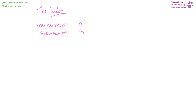Numbers are now going to be n. Even numbers are 2n. And an odd number is going to be 2n plus one. We can say that an even number is 2n because the property of an even number is that it is equally divisible by two. And an even number plus one always has to be an odd number, because even and odd numbers alternate in a number sequence.